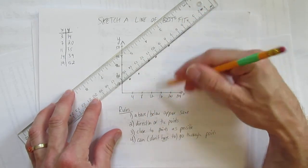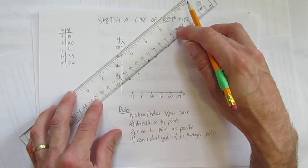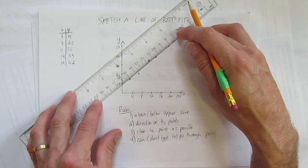My goal is same number above and below, go in the direction of the points. It takes a little bit of careful maneuvering, get as close to the points as possible.